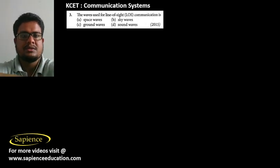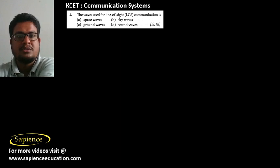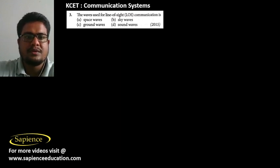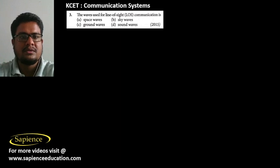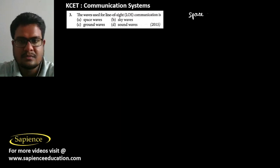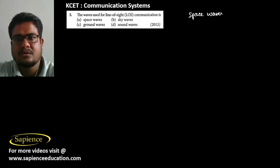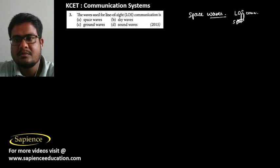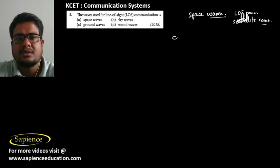In question number 3, the waves used for line-of-sight communication are space waves. Space waves are used for line-of-sight communication, space communication, and satellite communication. The answer is option A.